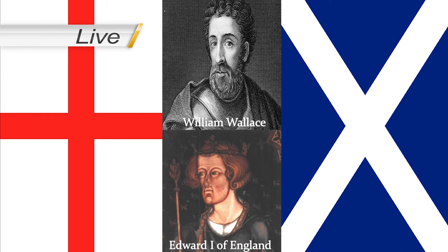King Edward has sent a force north to resolve what he refers to as the Scottish problem. He says he is confident of victory and has recruited some Scottish nobles still loyal to him, including Robert the Bruce — I wonder how well that will work out for him. Robert the Bruce has defected to the rebels. The Scots are giving the English the run-around but have finally met at Irvine and are negotiating, though I suspect this is just to buy time for Wallace to train his men.